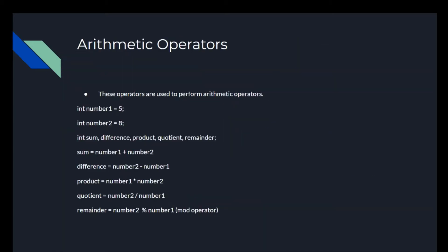So now we're going to talk about the arithmetic operators. These operators are used to perform arithmetic operations. So we're going to write int number1 equals 5, and int number2 equals 8. The variables we're going to be using are sum, difference, product, quotient, and remainder.